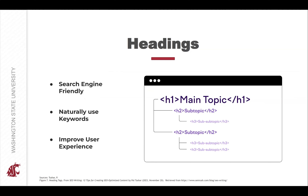Once you write your catchy H1 heading that includes your main keyword, you'll structure your article with the supporting headings. H2 subheadings should support your H1, and H3s support your H2s, creating a clear logical structure that search engines can read and understand, making your content more useful to users.